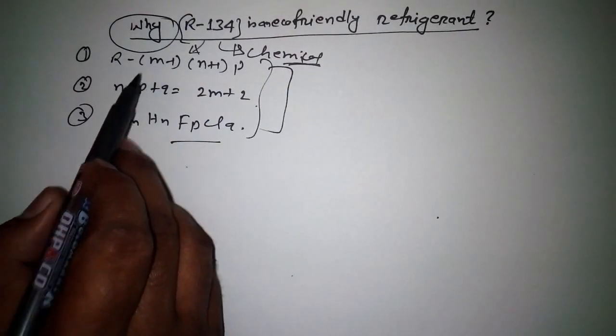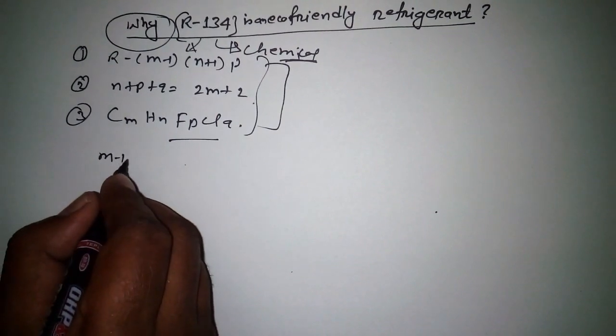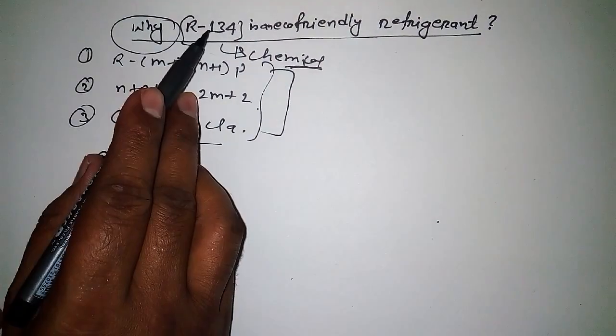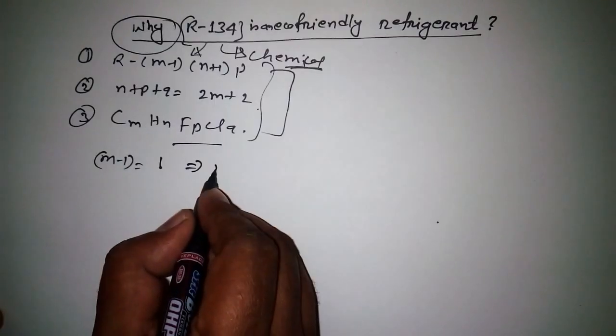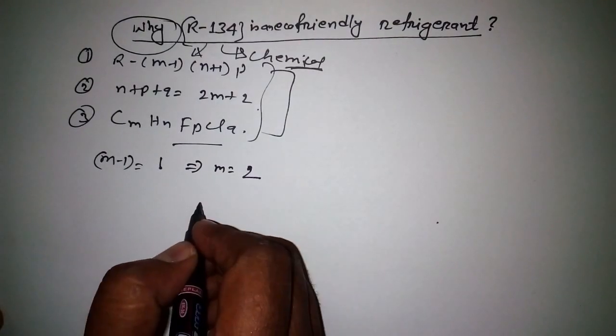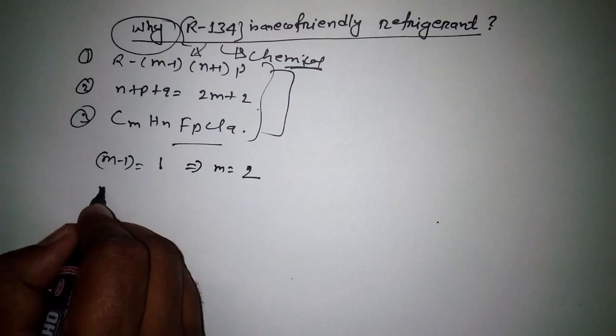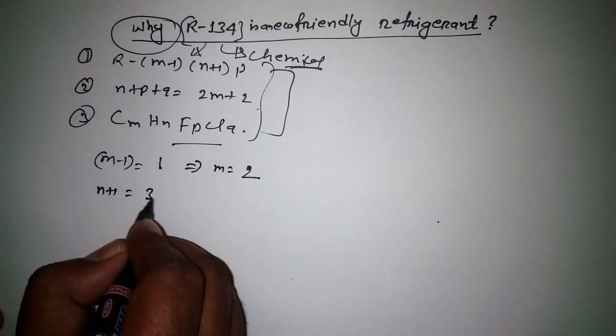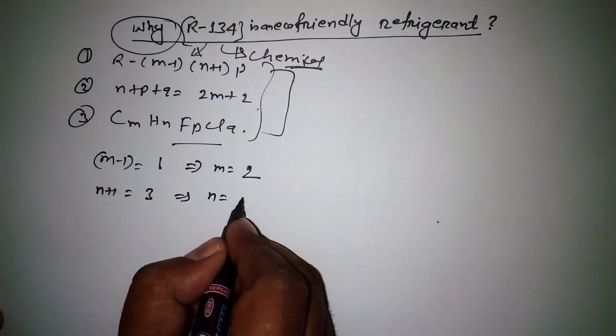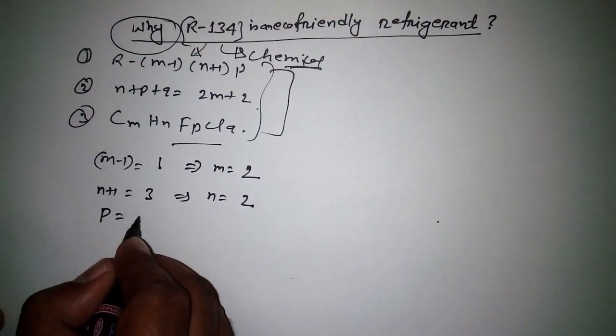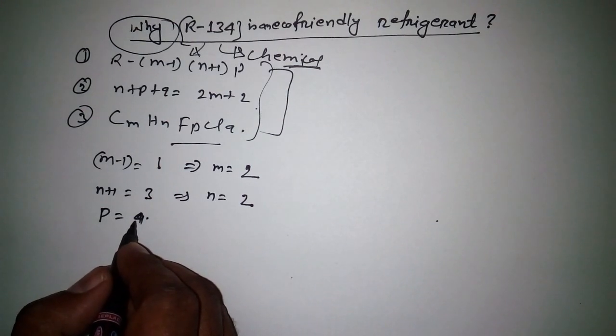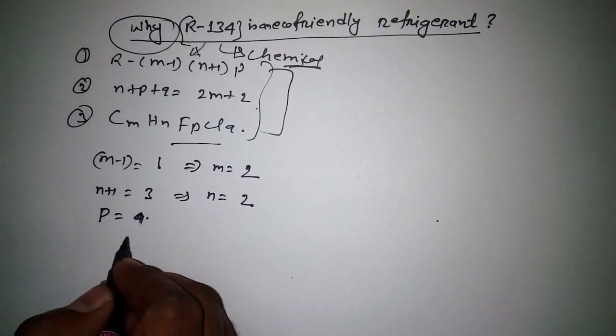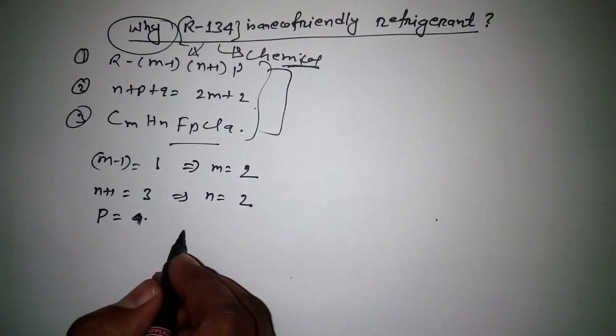First place we have m minus 1, and there first place we have 1. Just write 1. If we simplify, we get m is equal to 2. Now, in the second place, n plus 1 equals 3. If we simplify, n equals 2. Now p equals 4. Don't need to simplify because it's already given.